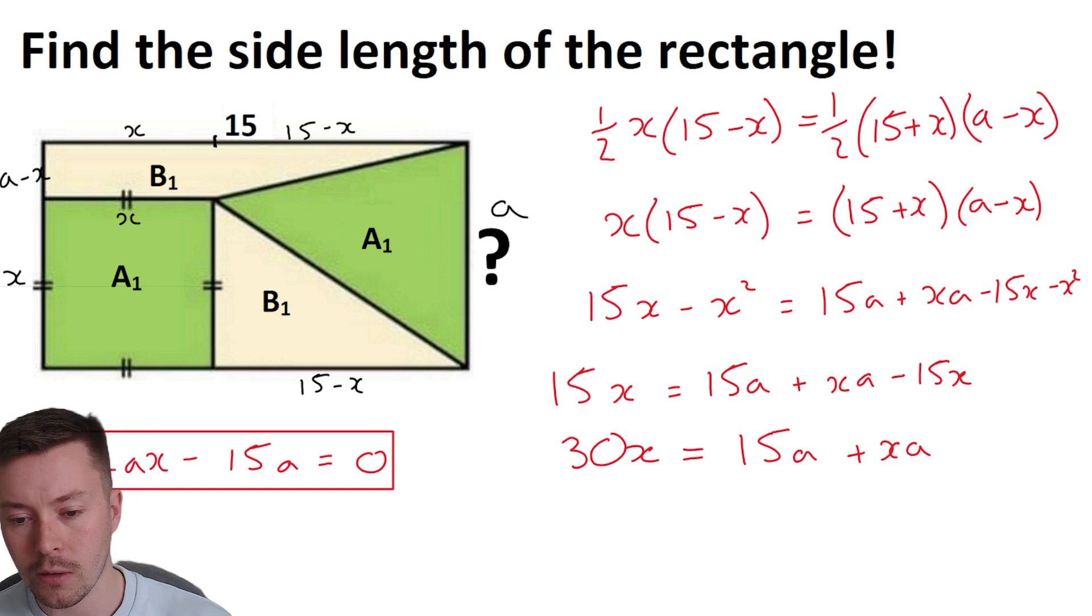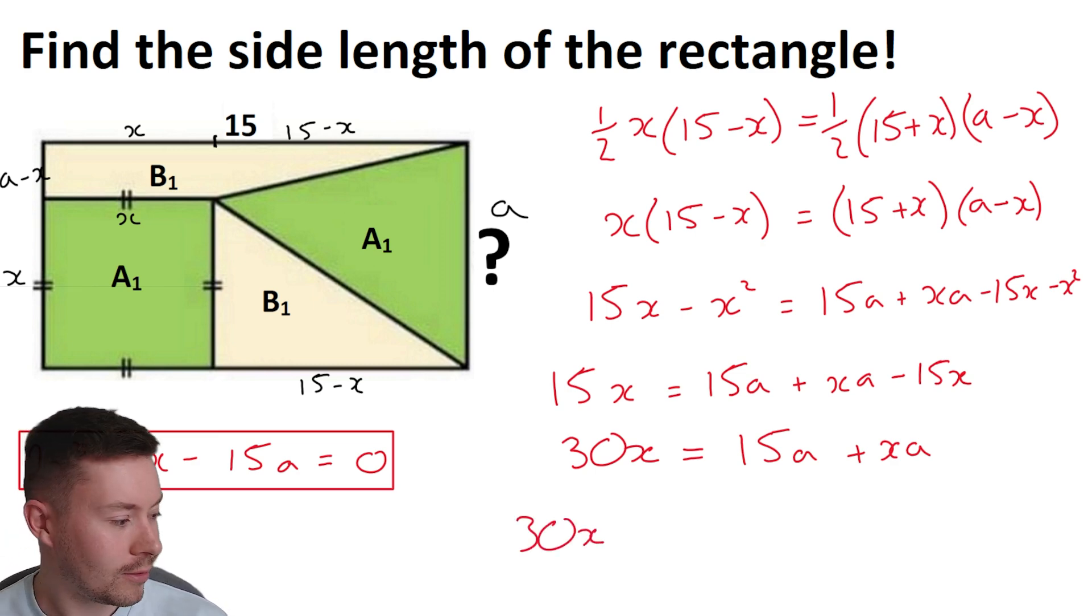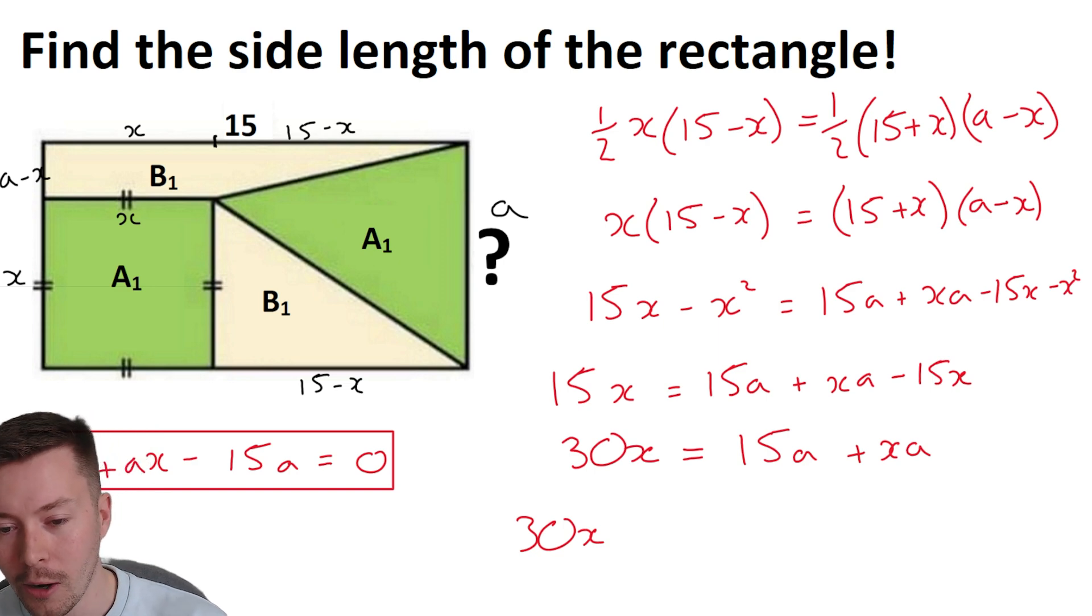And what I will do, just while I'm thinking of it, is put a box around here to box that off because that's going to be key later. So I've got 30X by adding 15X to both sides equals 15A plus XA. And we want it in terms of X, don't we? So we want all the X, all the X, what's the word I'm thinking of? I've completely lost the word. I want all of the values, not values, that's not the right word. I want all of the, I can't think of the right word. I'm going to take away XA from both sides anyway.